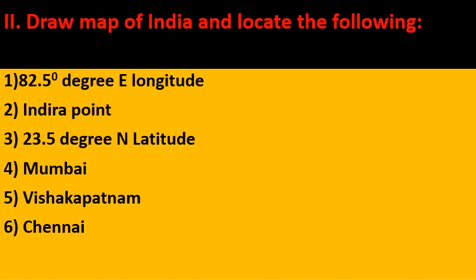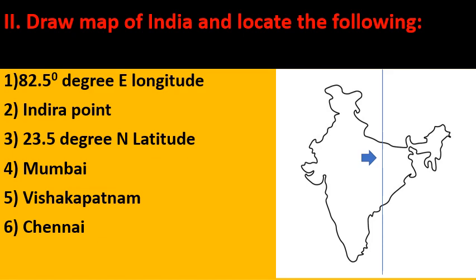Now we are in the second section: Draw a map of India and locate the following — 82.5 degrees East, Indira Point, 23.5 degrees North latitude, Mumbai, Visakhapatnam, and Chennai. For 82.5 degrees East, you can see on the right side the map of India with a vertical blue line and an arrow mark — this passes near Allahabad, that is Prayagraj.